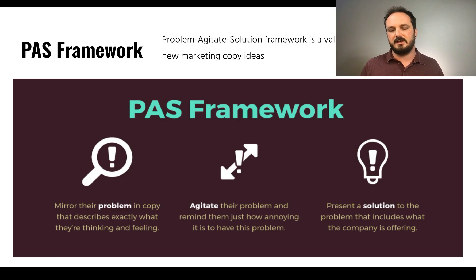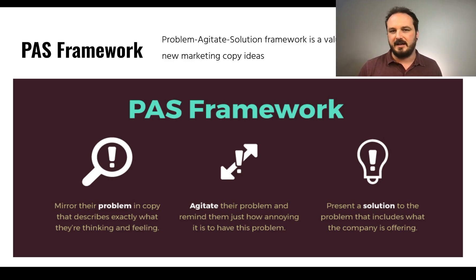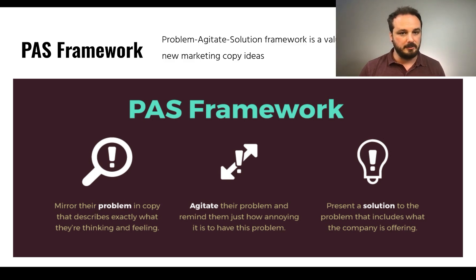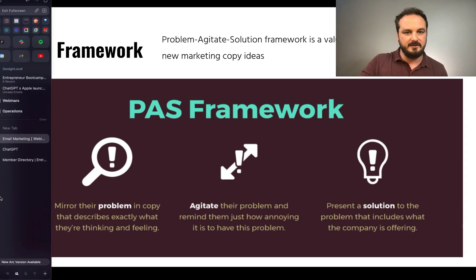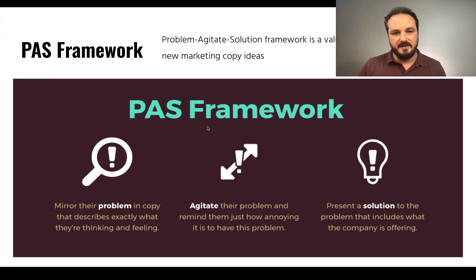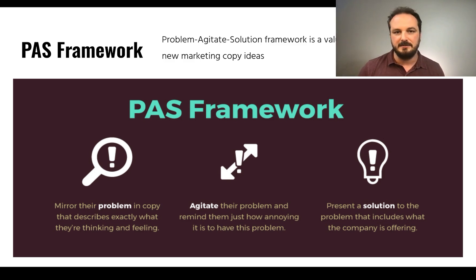Before we get into actually creating email marketing, I want to go over two different content writing frameworks. The first is the Problem Agitate Solution framework, PAS for short — a valuable framework used for creating marketing copy ideas. This boils down to three parts: the problem, where you mirror their problem in copy that describes exactly what they're feeling; then agitate, where you remind them just how annoying it is to have this problem; and then you present a solution, including what your company is offering and how you get them to their aha moment.